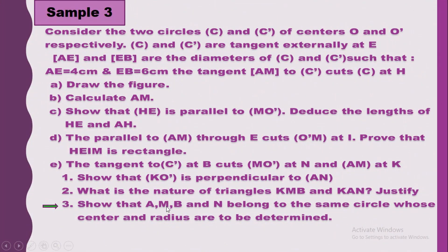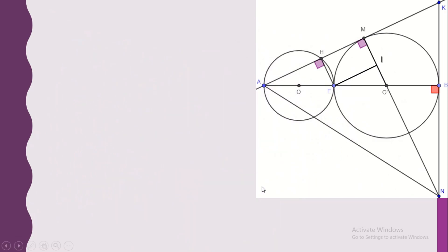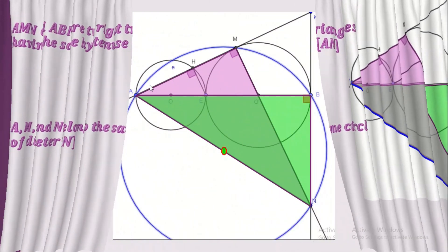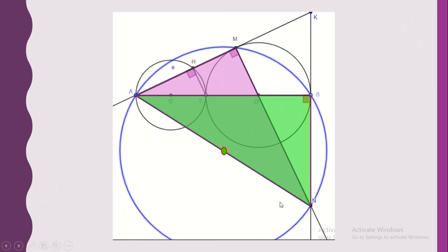Now show that A, M, B, and N belong to the same circle, and determine its center and radius. Triangle AMN is right-angled at M, so its hypotenuse is AN. Triangle ABN is also right-angled at B, and its hypotenuse is the same side AN. We have two right triangles sharing the same hypotenuse AN. Therefore A, M, B, and N all lie on the same circle with diameter AN. Its center is the midpoint of AN and its radius is half of AN.